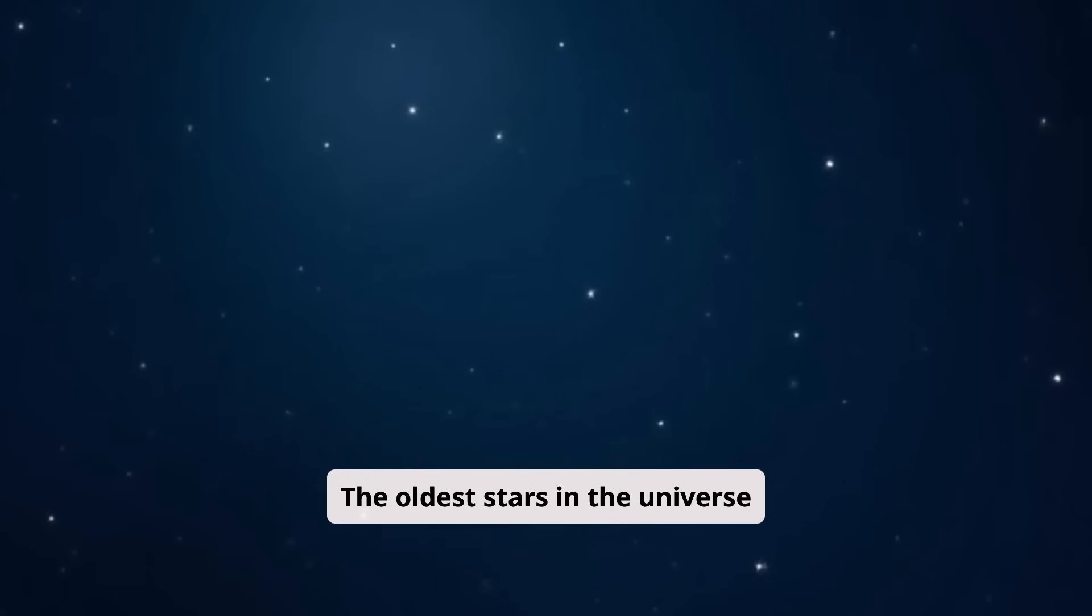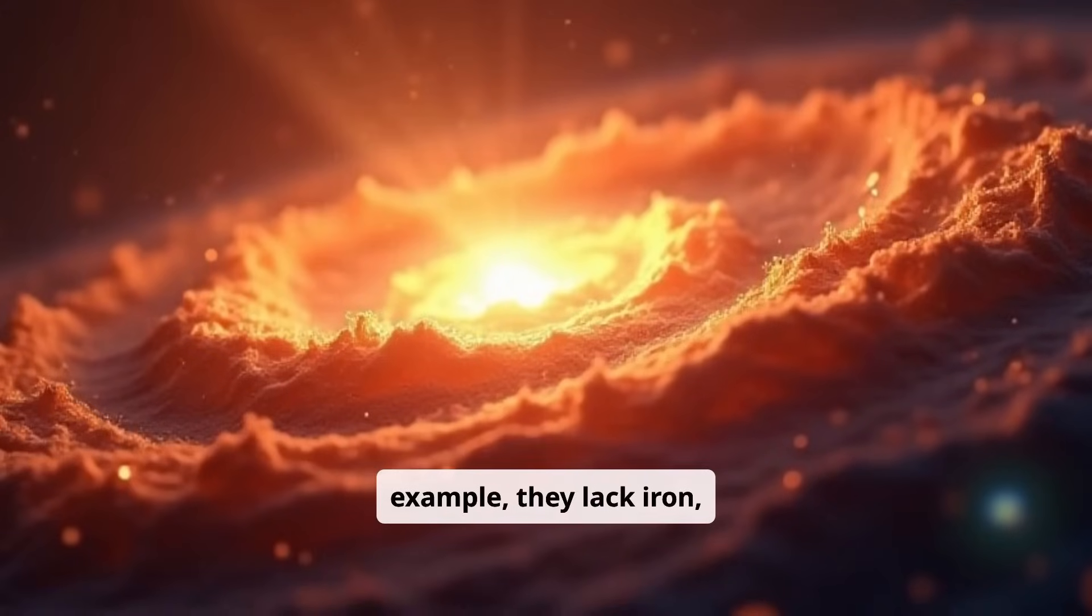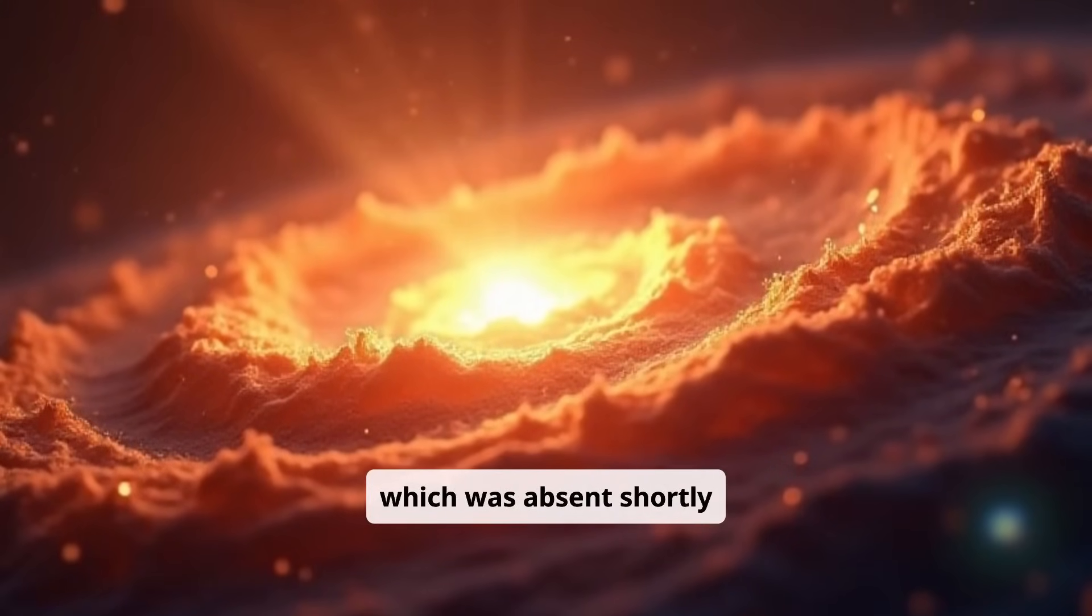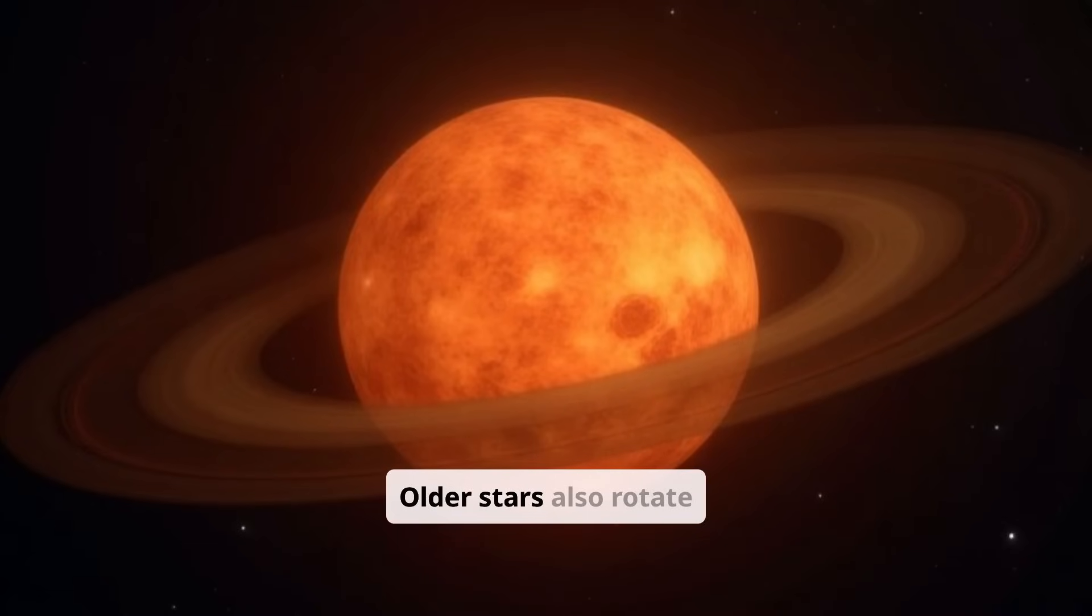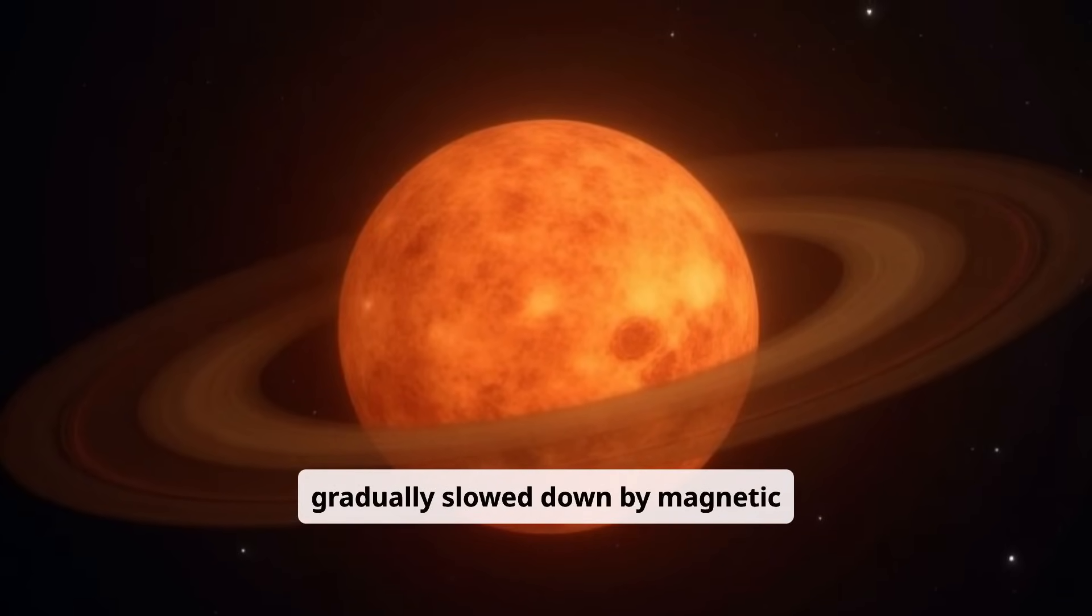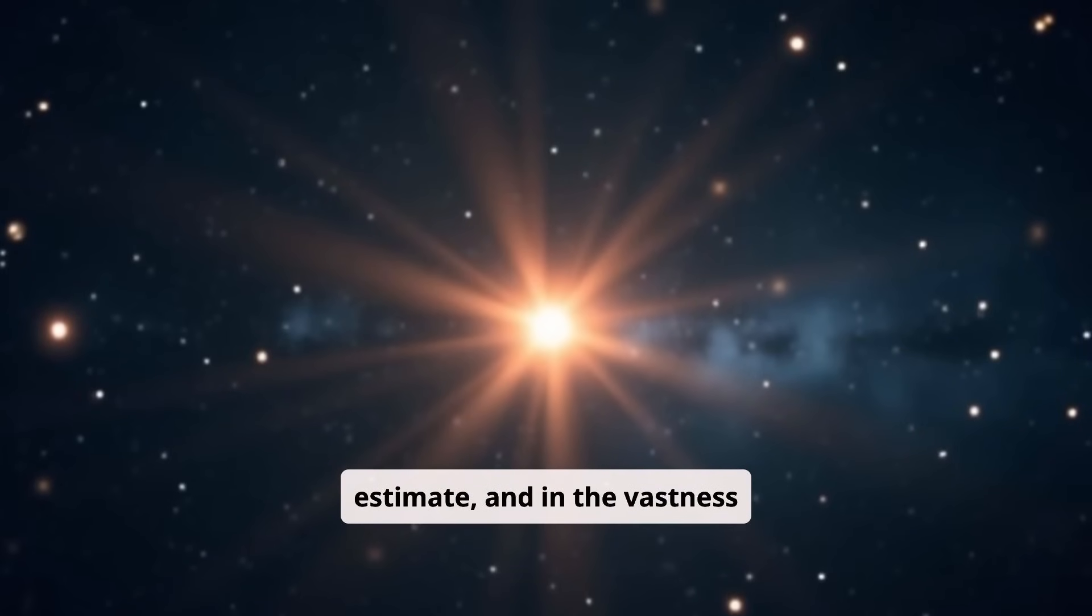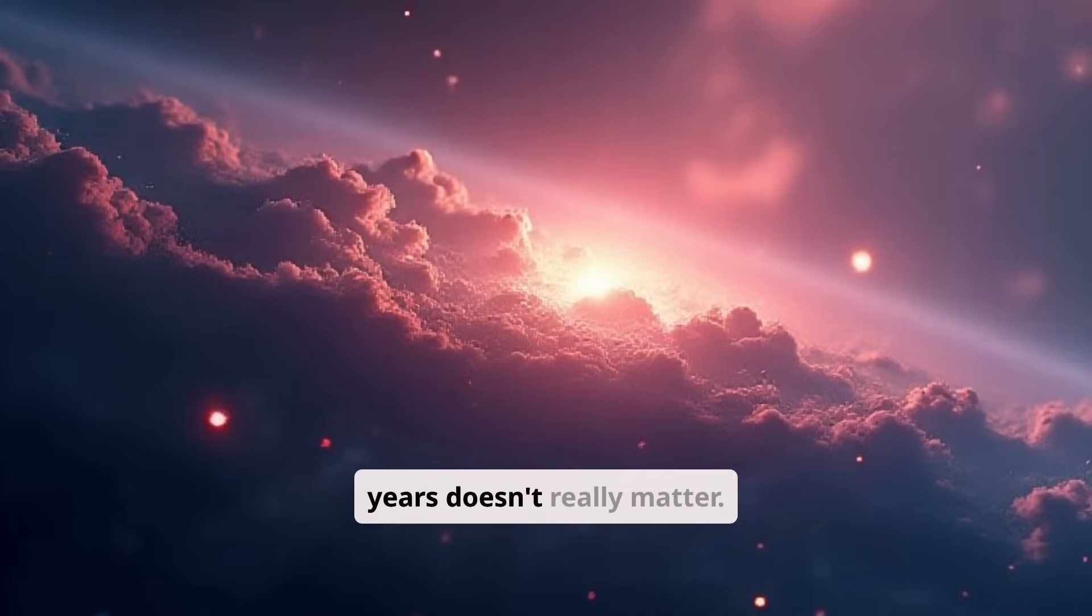The oldest stars in the universe can be identified by their chemical composition. For example, they lack iron, which was absent shortly after the big bang. Older stars also rotate more slowly because they are gradually slowed down by magnetic fields. The age of a star is always an estimate, and in the vastness of the universe, a few million years doesn't really matter.